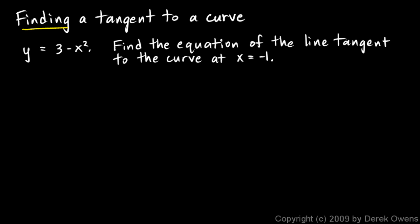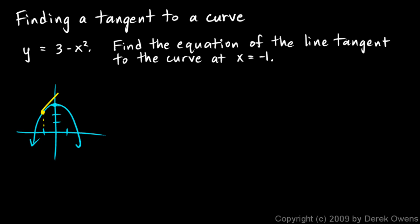Now we'll talk about finding a tangent to a curve — an important topic. At the time calculus was being developed, this was one of the problems Newton and Leibniz effectively solved: finding the exact equation of a line tangent to a curve at a particular point. In this example, y equals 3 minus x squared — a parabola that opens downward. We want to find the equation of the line tangent to the curve at x equals negative 1.